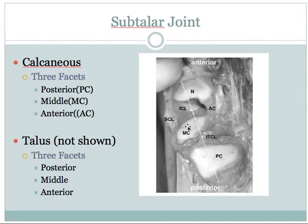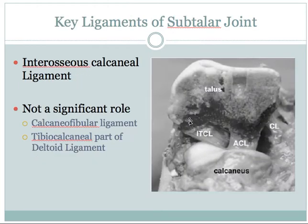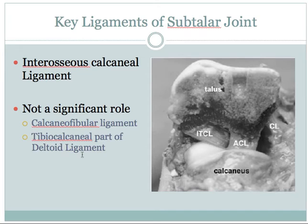There is only really one degree of freedom at the subtalar joint. The key ligament is the interosseous talocalcaneal ligament, with a minor role played by other ligaments such as the calcaneofibular ligament, the tibial calcaneal part of the deltoid ligament, and parts of the capsule that are labeled in some studies but are not as significant.